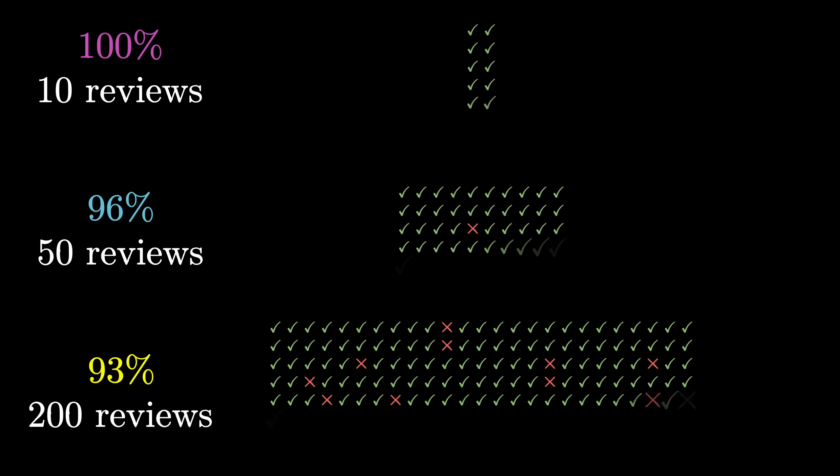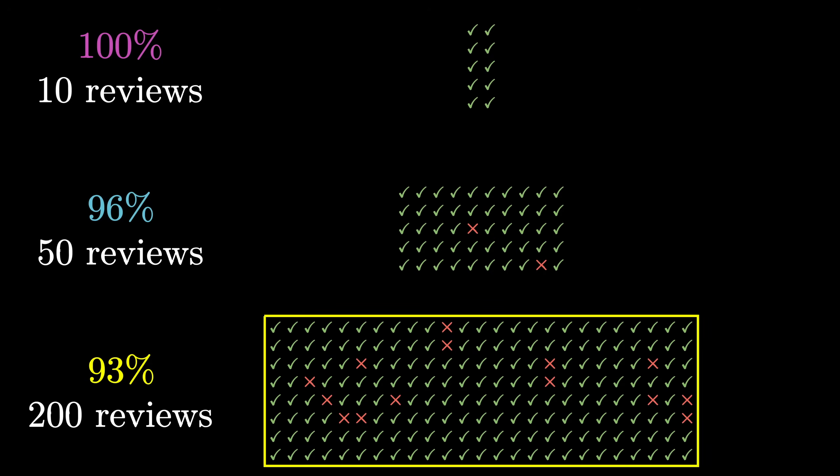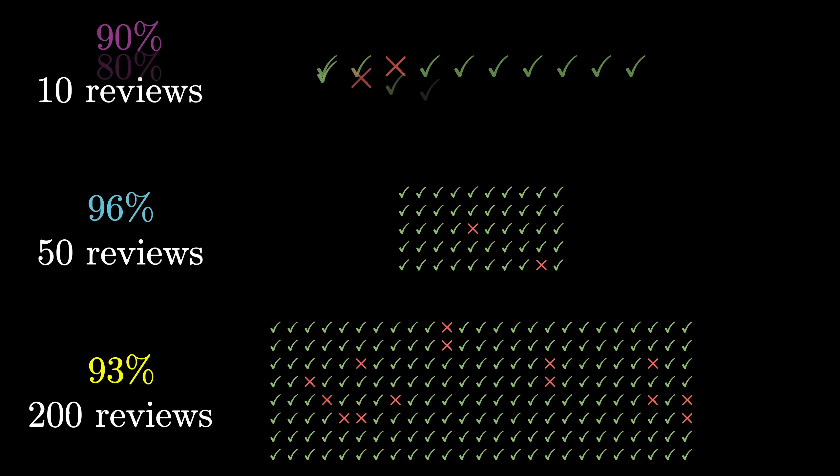I think we all have this instinct that the more data we see, it gives us more confidence in a given rating. We're a little suspicious of seeing 100% ratings, since more often than not, they come from a tiny number of reviews, which makes it feel more plausible that things could have gone another way and given a lower rating.